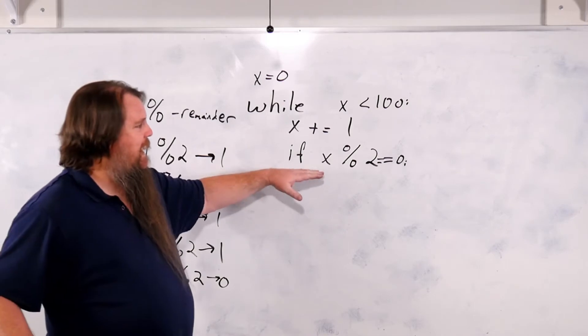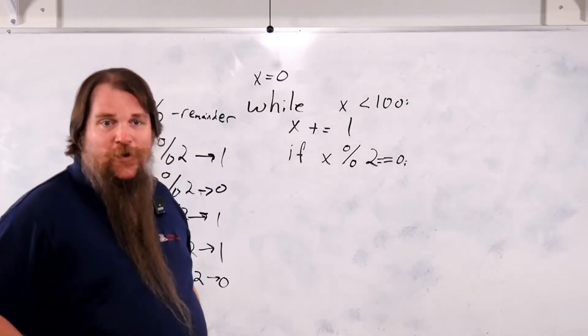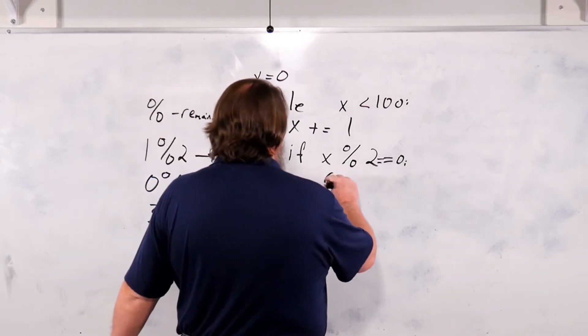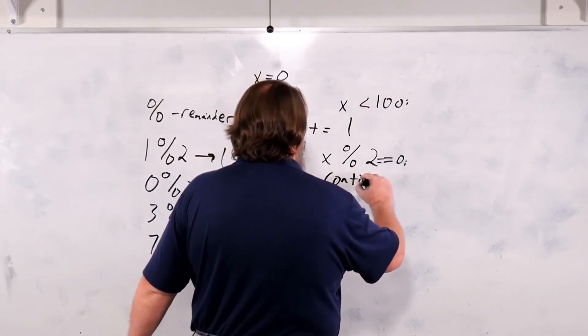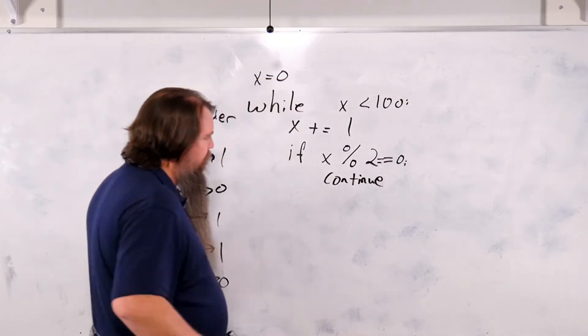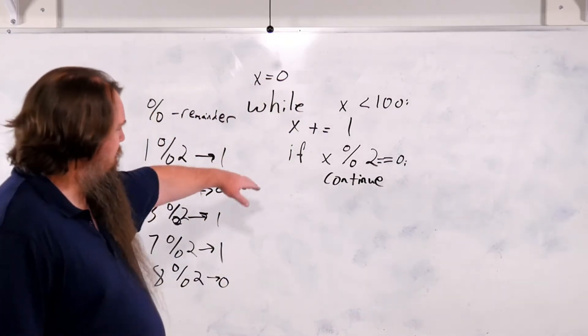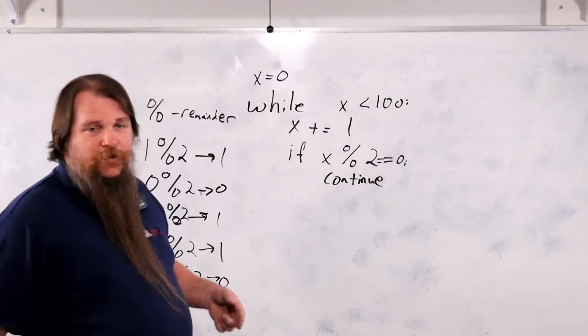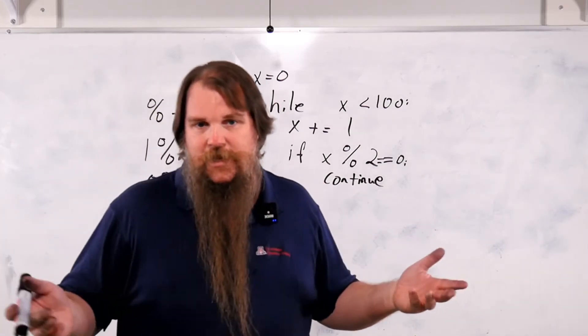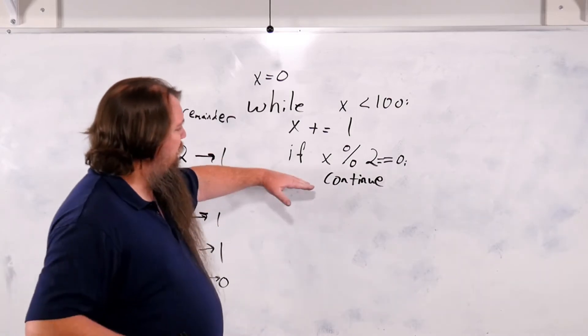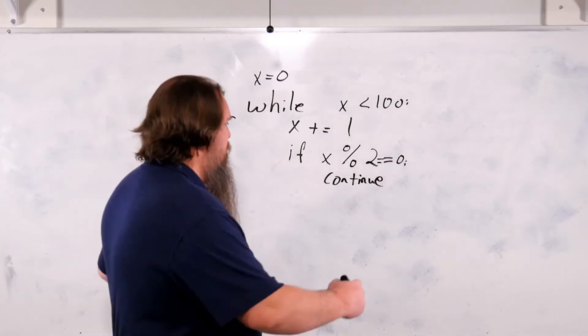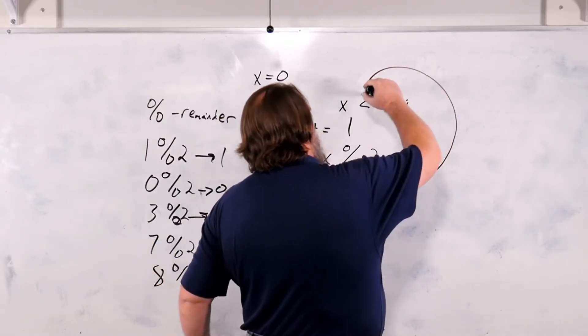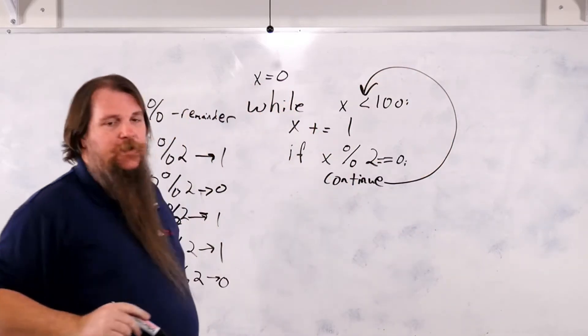So if you ask if x mod 2 is equal to 0, what you're really asking is, is this even? If it is even, then we will continue. Now what continue does, is continue says, I want to keep doing the loop, at least maybe keep doing the loop, but I don't want to do anything more in the body. So this is really a jump statement that says, jump back up to the top of the loop and terminate.